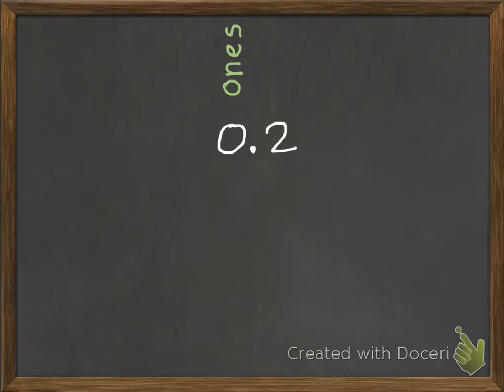We have our decimal point, and then when we move over to the right from our ones, we have tenths. Because it takes ten of those to equal one whole.